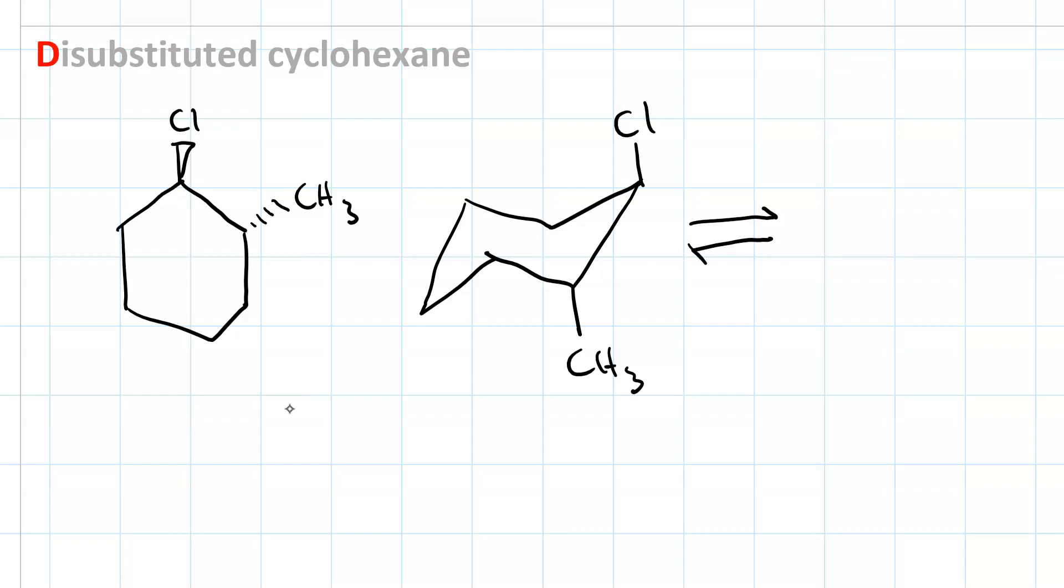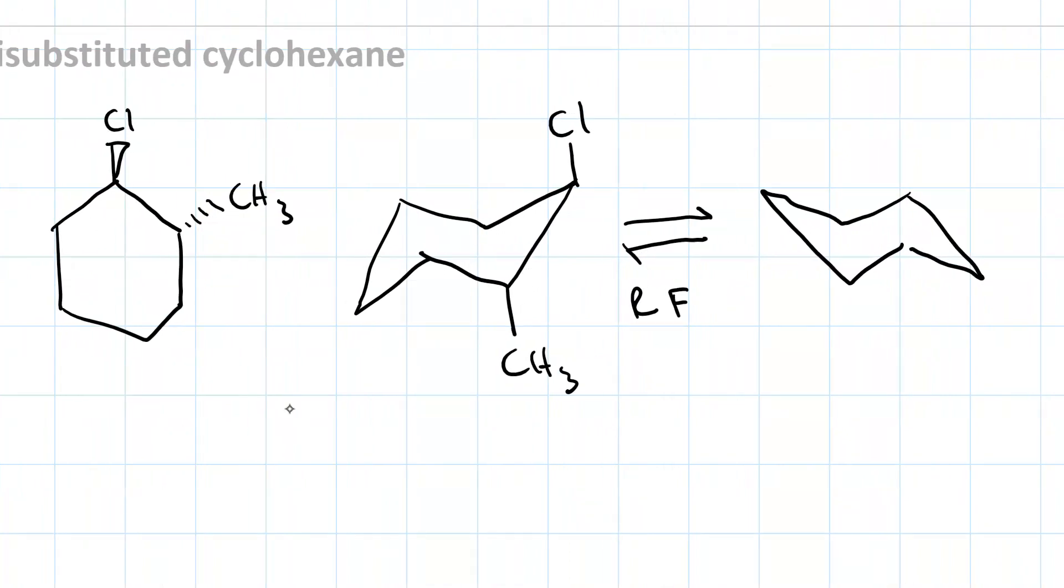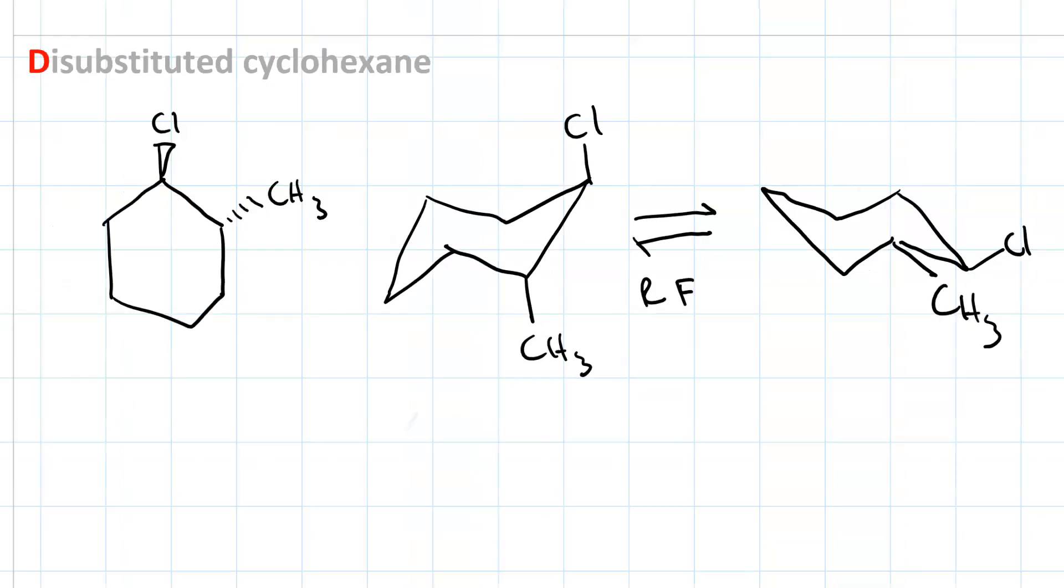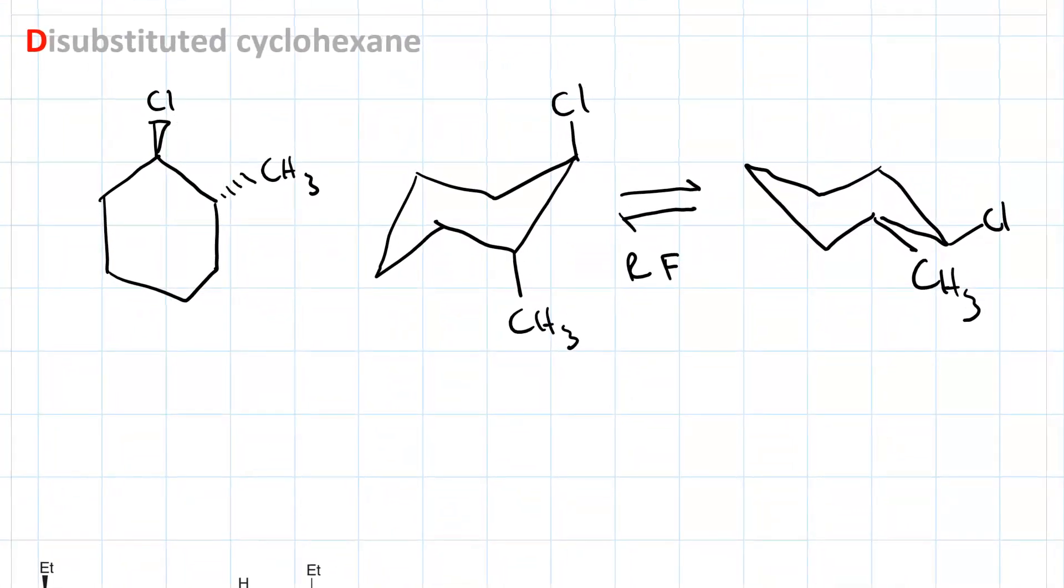Let's look more at some different situations with disubstituted cyclohexane. So, let's say we had 1-chloro-2-methyl cyclohexane, and the chloro is on a wedge, and the methyl is on a dash. Let's draw the two rings, or the two chairs, rather. Let's draw the other. There's one chair, and if we do the ring flip, there's the other. So, clearly, the one on the right is more stable, because both of my groups are equatorial.